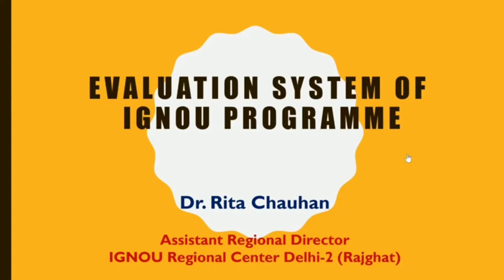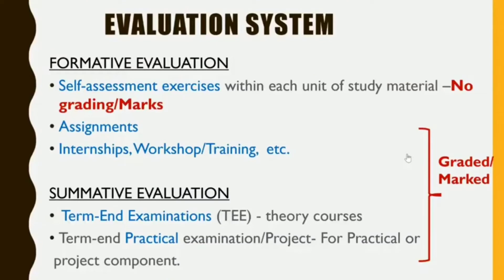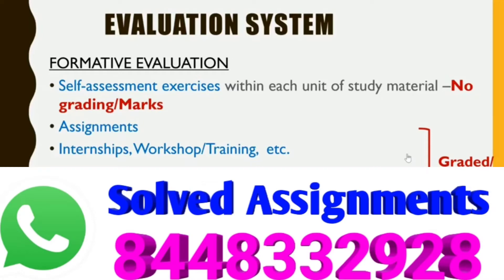IGNOU programs' components and their marking scheme — how they are structured. In IGNOU, there are two types of evaluation systems: Formative and Summative. Formative evaluation is the evaluation that you have during your study, like self-assessment exercises, assignments, internship, workshop, training, etc. Summative evaluation is the evaluation at the end of your session, also called term end examination.